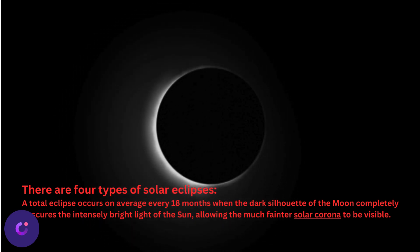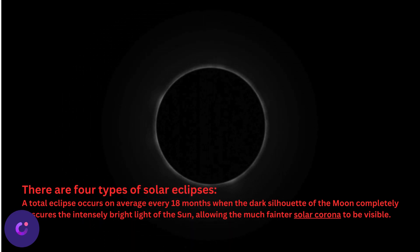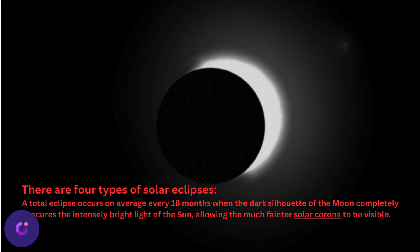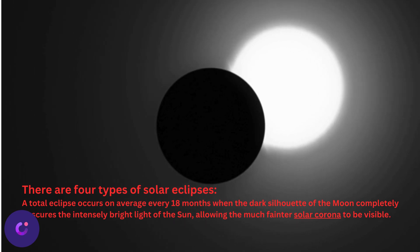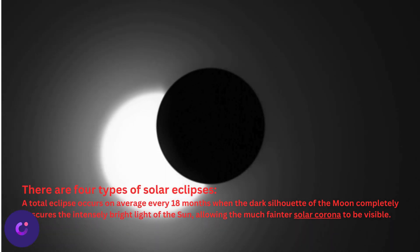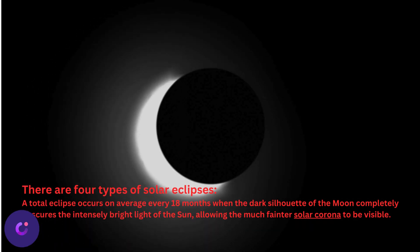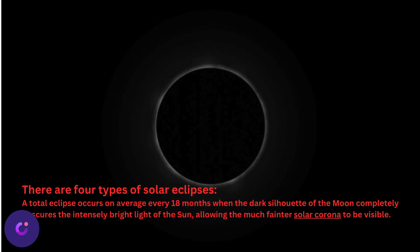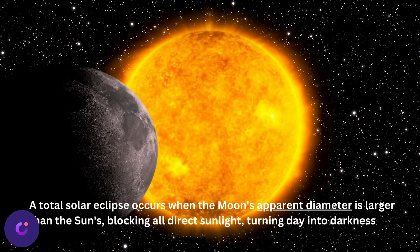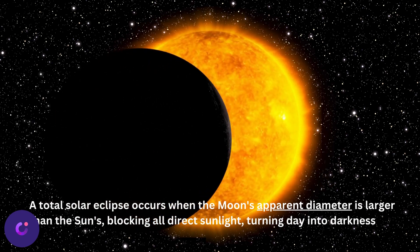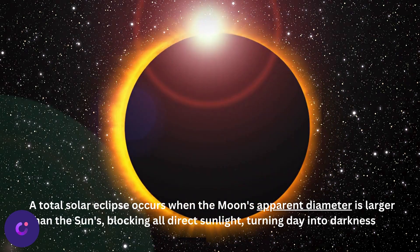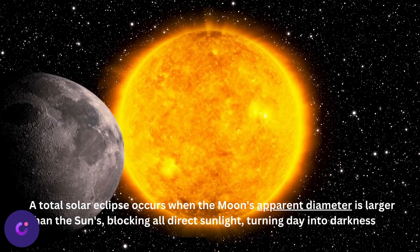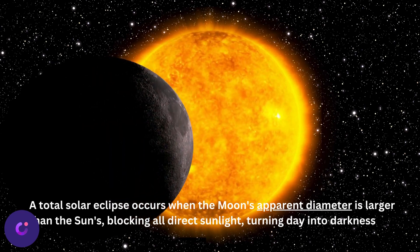A total eclipse occurs on average every 18 months, when the moon completely obscures the intensely bright light of the sun, allowing the much fainter solar corona to be visible. A total solar eclipse occurs when the moon's apparent diameter is larger than the sun's, blocking all direct sunlight and turning day into darkness.